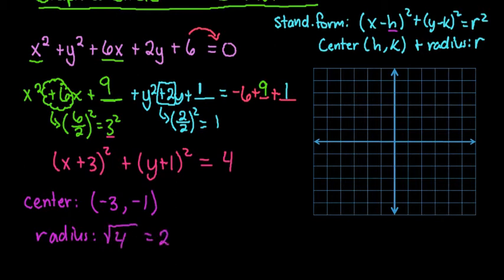So to graph this, we would start with our x-coordinate. And our x-coordinate tells us to go back 3. So I would go 1, 2, 3. And then our y-coordinate tells us to go down 1. So our center would be at negative 3, and then down 1.